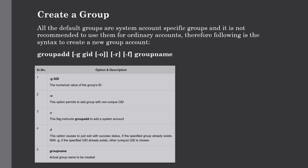Here are the options for groupadd. The -g option specifies the numerical value of the group ID. The -o option permits adding a group with a non-unique GID. The -r option instructs groupadd to add a system account. The -f option causes groupadd to simply exit with a success status if the specified group already exists. The group name is the actual group name to be created. If you do not specify any parameters, the system makes use of the default values.